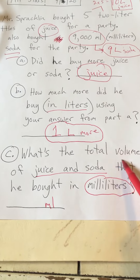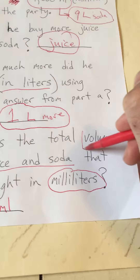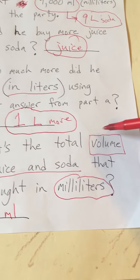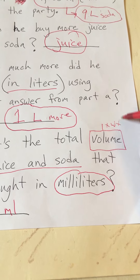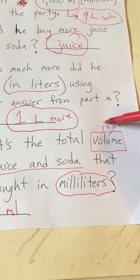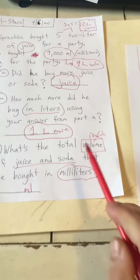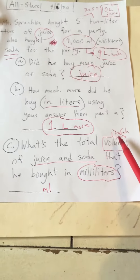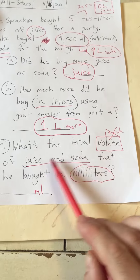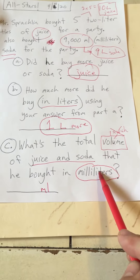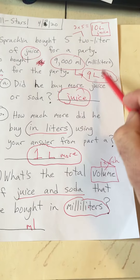Don't let 'volume' confuse you — we did a lot of volume work with length times width times height, but that was for finding the volume of a rectangular prism. We're not doing that here. Volume is just the amount of liquid we have. So what's the total amount of liquid — juice and soda — in milliliters?